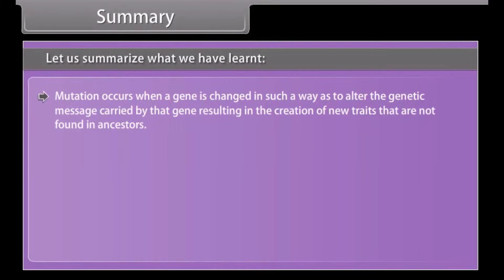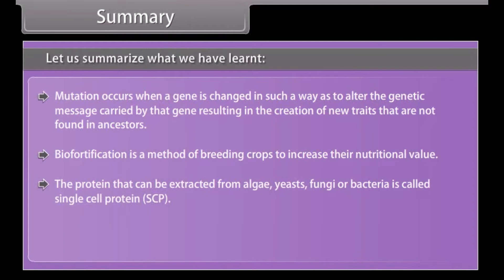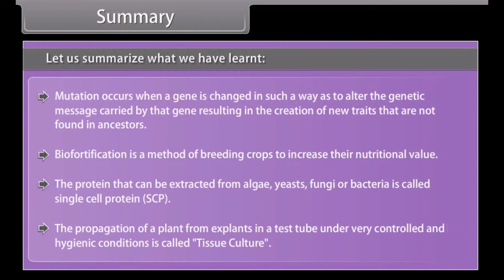Mutation occurs when a gene is changed in such a way as to alter the genetic message carried by that gene, resulting in the creation of new traits not found in the ancestors. Biofortification is a method of breeding crops to increase their nutritional value. The protein that can be extracted from algae, yeasts, fungi or bacteria is called single cell protein (SCP). The propagation of a plant from explants in a test tube under very controlled and hygienic conditions is called tissue culture.